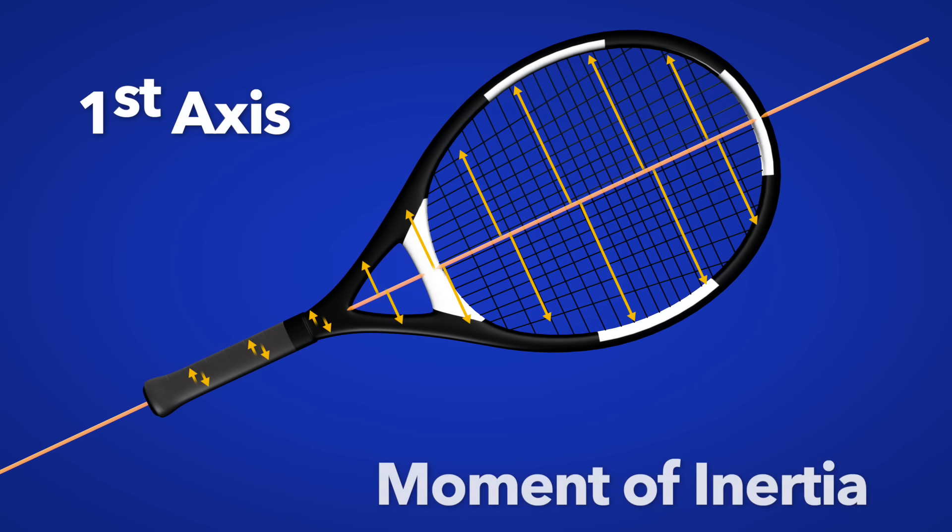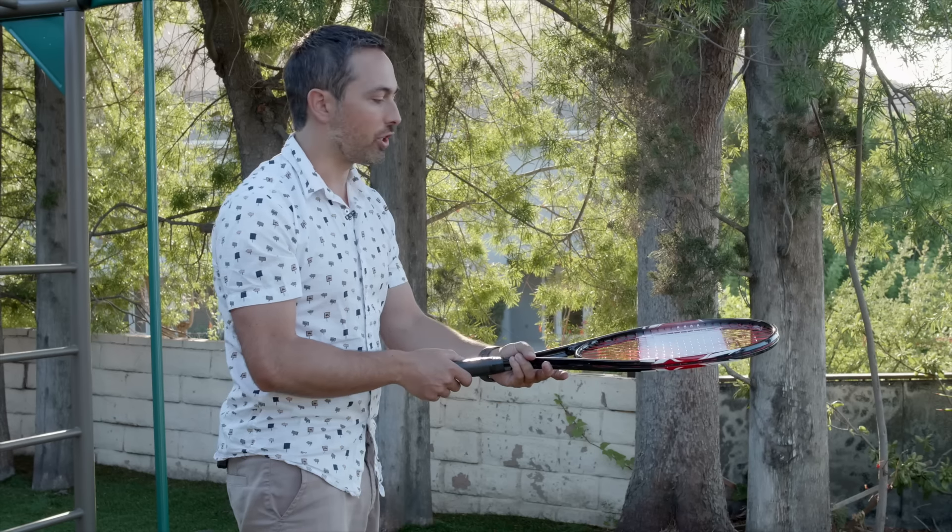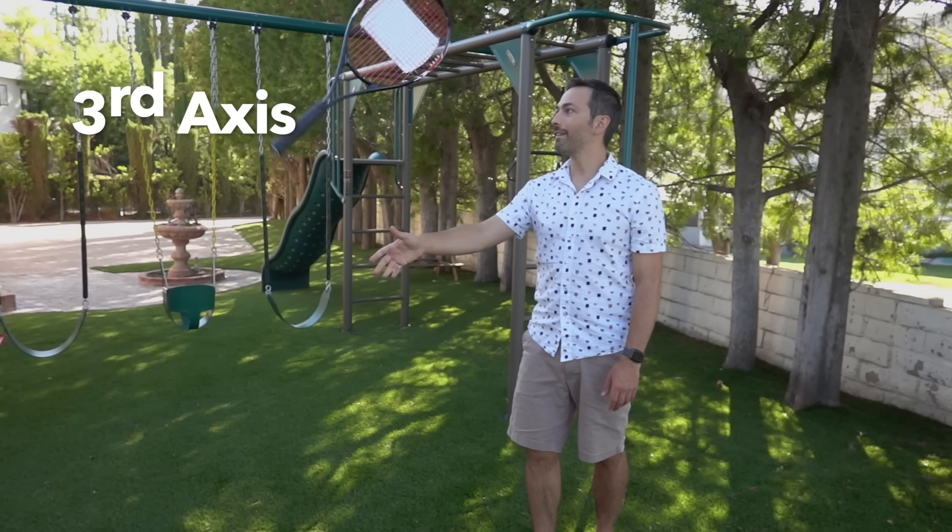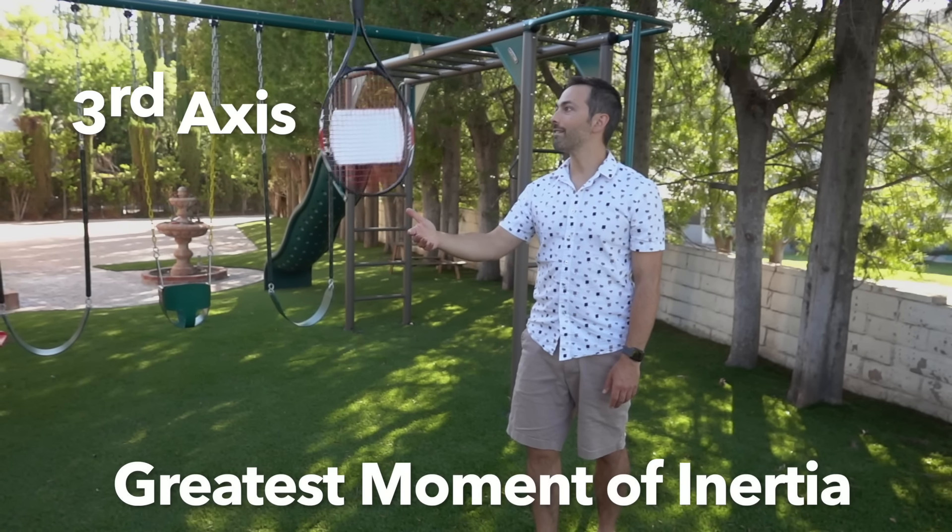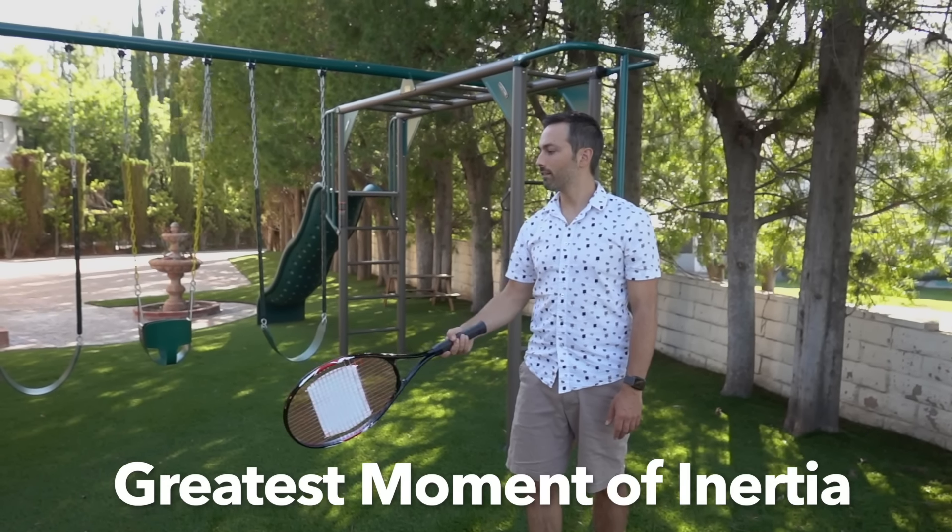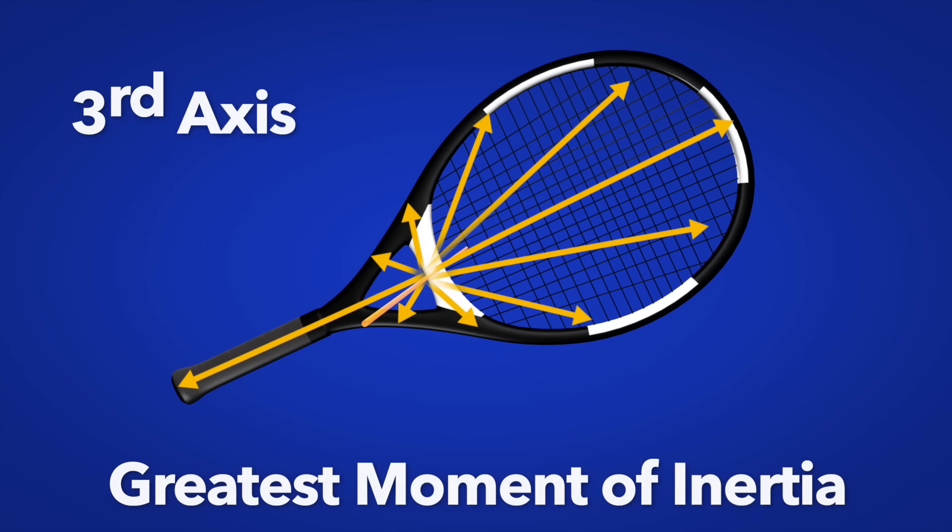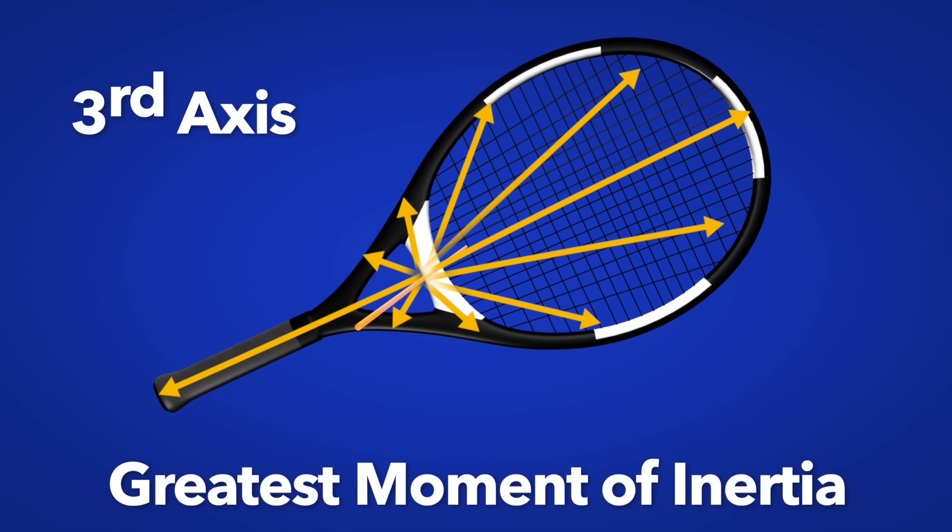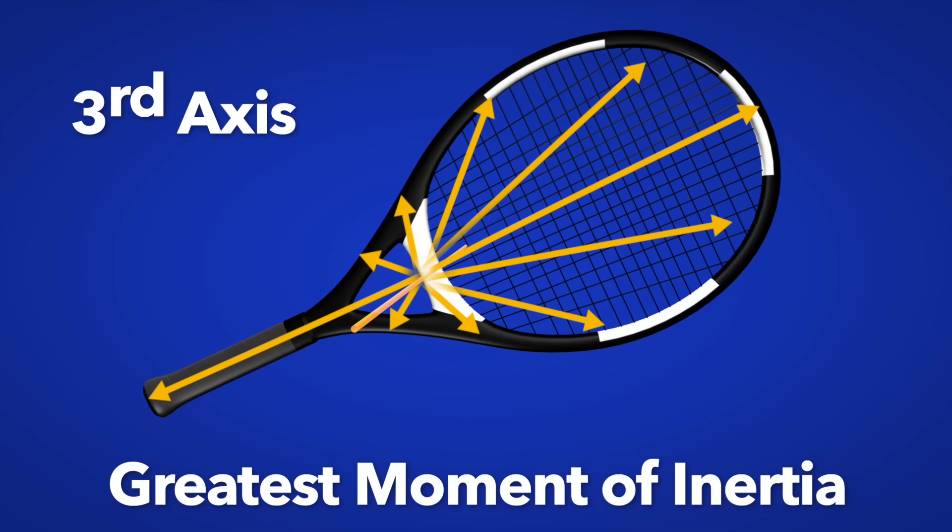And that is because the mass is distributed closer to this axis than to any of the others. We say its moment of inertia is the smallest when spinning in this orientation. Spinning about the third axis has the greatest moment of inertia, and so the racket gets spinning pretty slowly. And that's because this mass is distributed as far from this axis as possible. So this is the maximum moment of inertia axis.